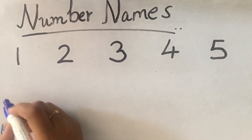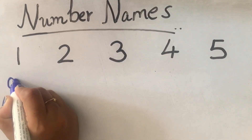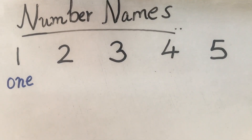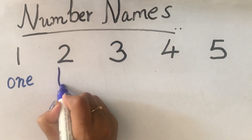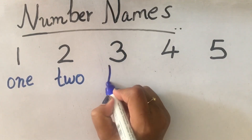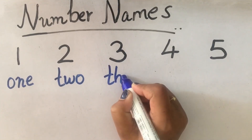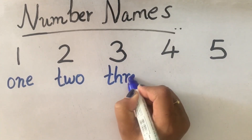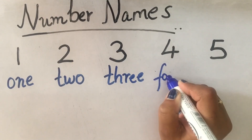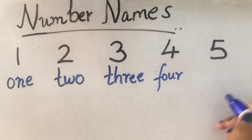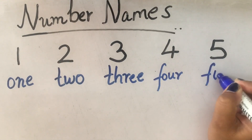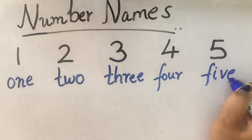So 1 is O-N-E, 2 is T-W-O, 3 is T-H-R-E-E, 4 is F-O-U-R, and 5 is F-I-V-E.